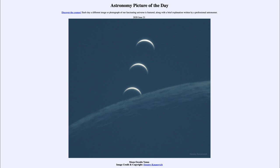Eclipses occur on a regular schedule, so we get eclipses of some kind or other every year. In fact, about every six months, somewhere in the world, there will be an eclipse — either an eclipse of the Sun or eclipse of the Moon. But they tend to be rare because they're only visible in certain areas. Solar eclipses, and especially total solar eclipses, are only visible from a very small portion of the world each time. You have to be in precisely the right location; being a little bit too far north or south, even by just a few hundred miles, can mean the difference between a total eclipse and only a partial eclipse.